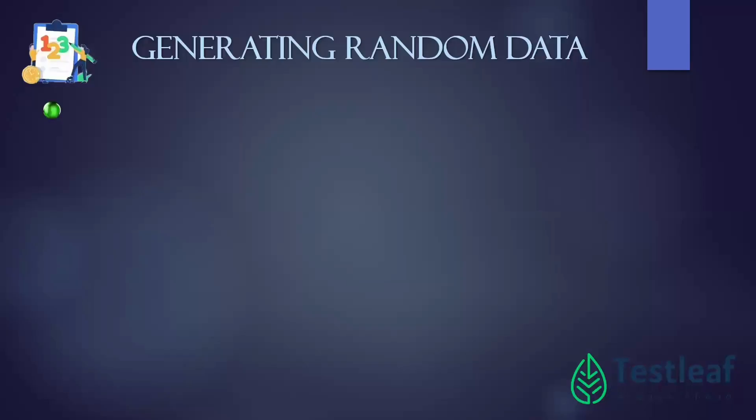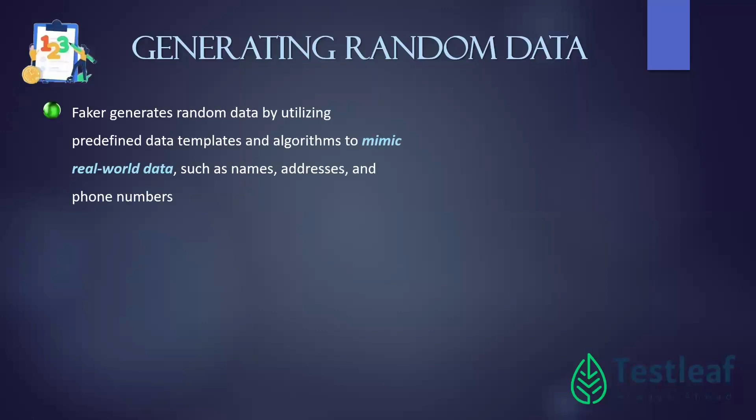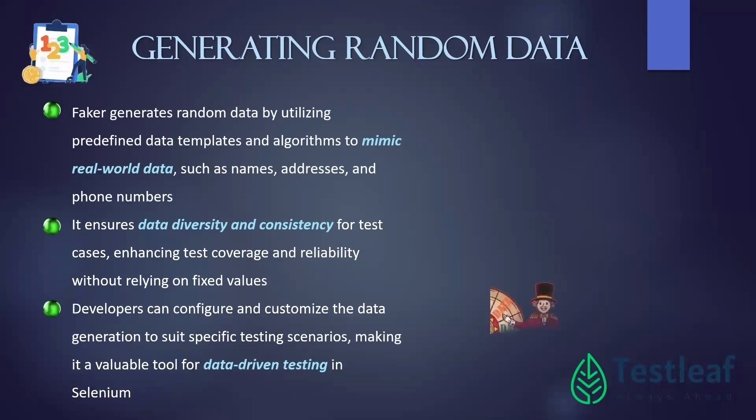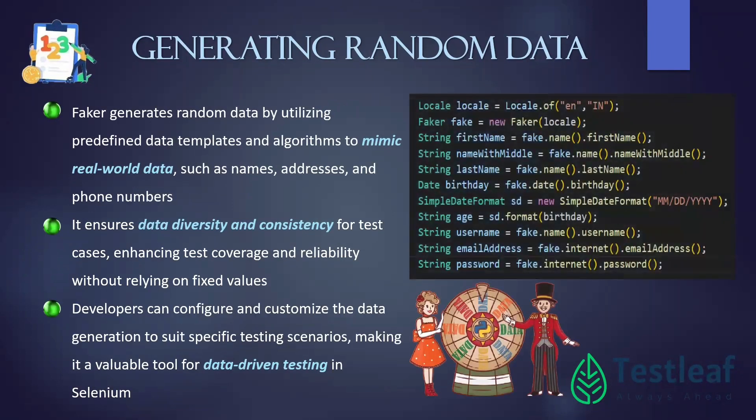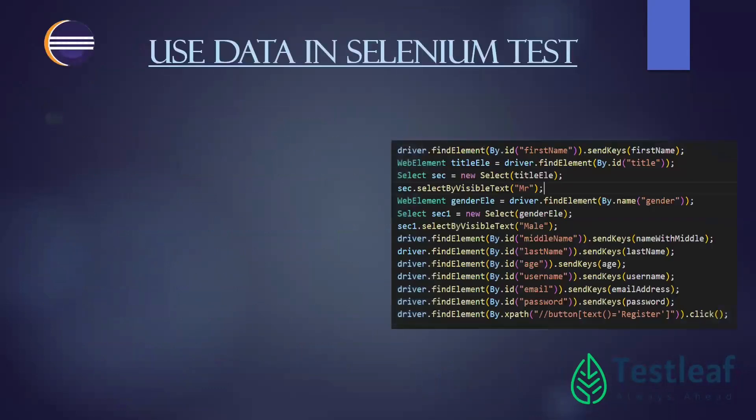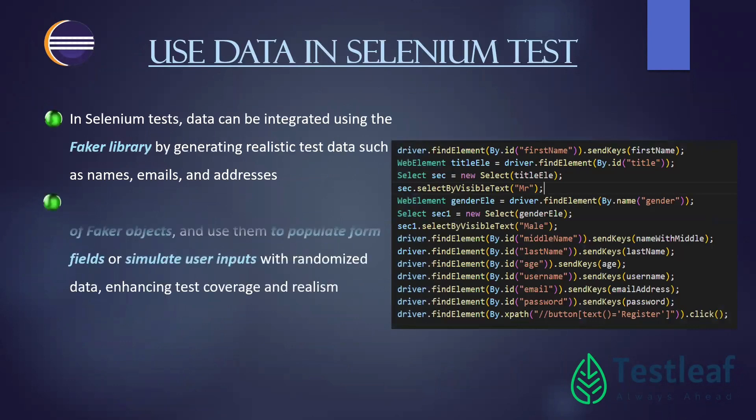The steps: first you have to import it, then copy the dependency and import it and use it in your class. Generating random data is not a very tedious process using Faker API. You can generate all this data, store in a variable, and finally apply your data in your Selenium test. Wherever you have sendKeys, wherever you want to pass the data, you will put all those data in the sendKeys format. That is how we are generating random data and using it in the Selenium test more effectively.